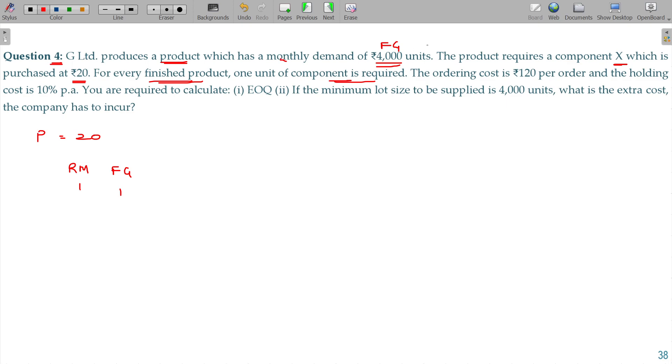This is monthly demand. So one of the finished goods is required. As per this one, my requirement of raw material being 12,000 units, that is the annual requirement, annual consumption. So we got the A also.